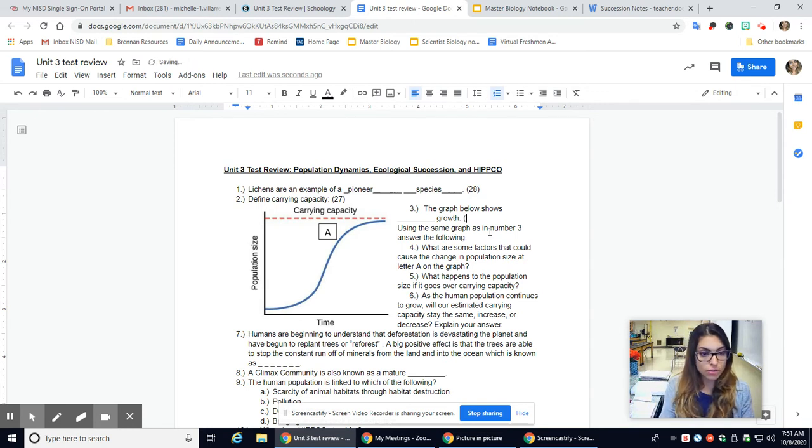The graph shows some type of growth. We have only two types of growth. We have logistic and exponential. Logistic growth starts out nice and fast where you do have rapid population growth. However, you begin to run out of resources and you eventually reach carrying capacity. Exponential growth, no limit on resources. So you have a continuous incline of a population. Number three says, using the same graph as in number three, which is right here on the left, answer the following.